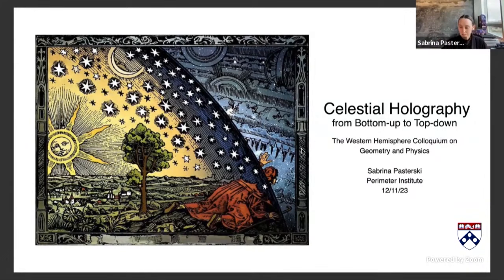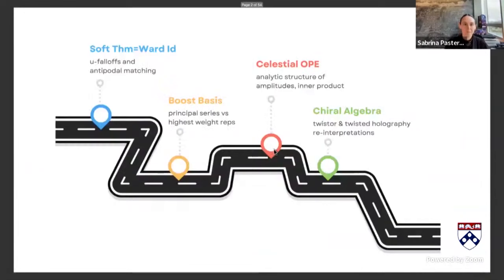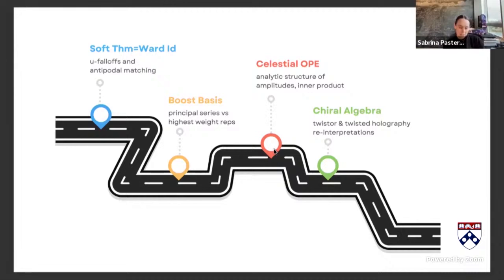Here is the roadmap for today. I'm going to spend a bit more time on the soft theorem equals Ward identity story that started the program, because I think it distinguishes — or at least sets into context — what the celestial holography program is compared to other ways of looking at holography. Along the roadmap I've put places where mathematicians might complain, or at least find insights, at various steps.